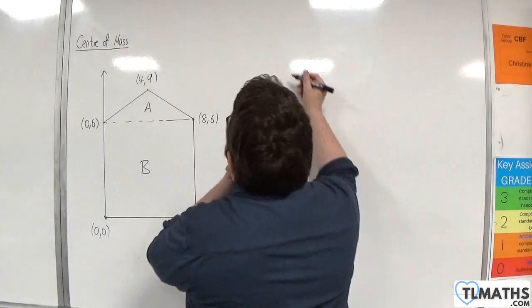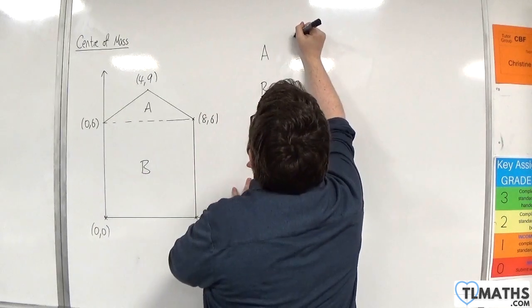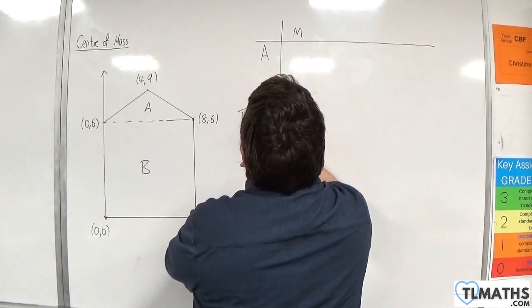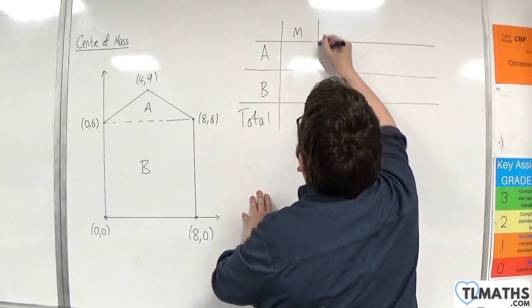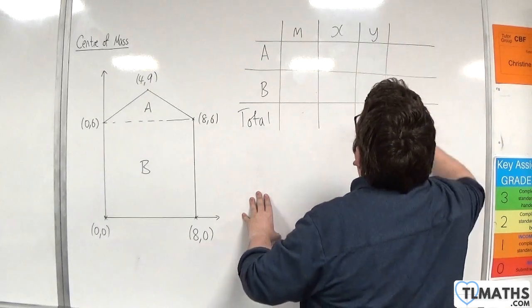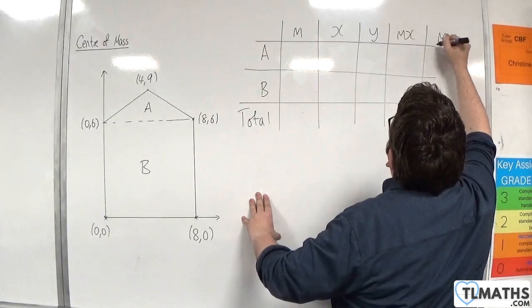So, I'm going to build up my table, A and B, and I've got the mass and total. I've got the x-coordinate of the central mass, the y-coordinate, the mass times x, and the mass times y.